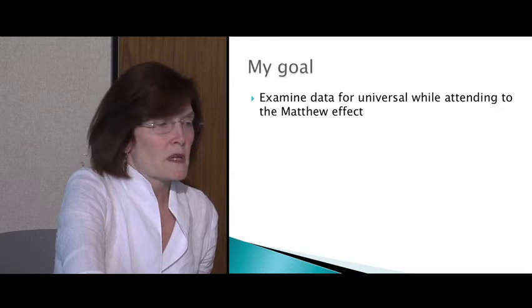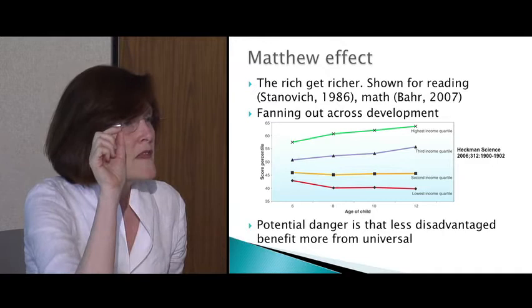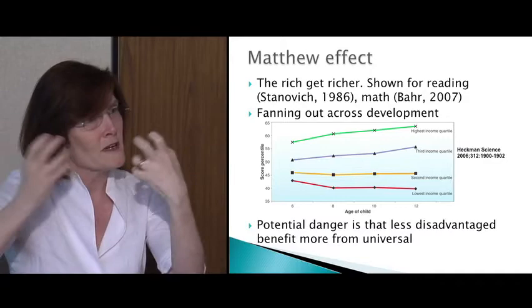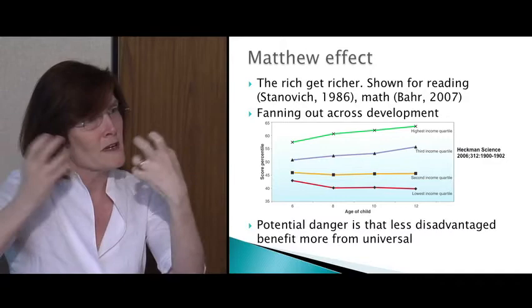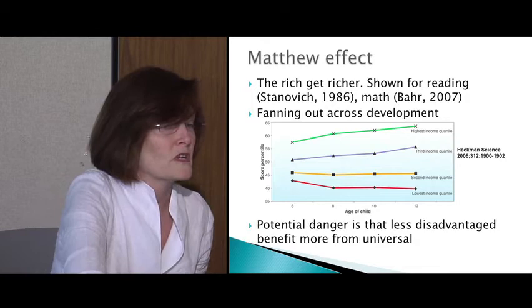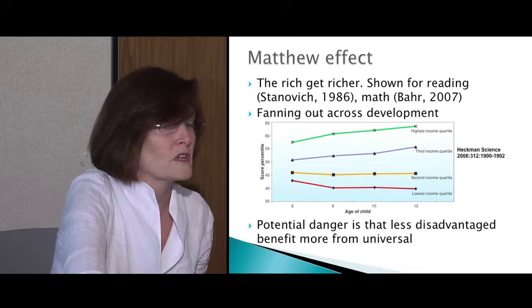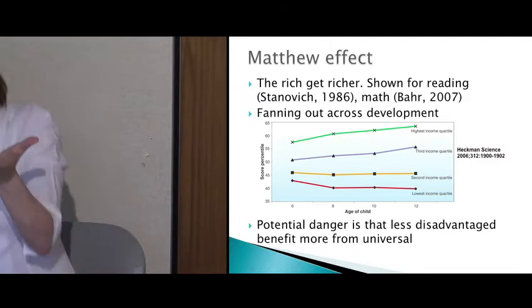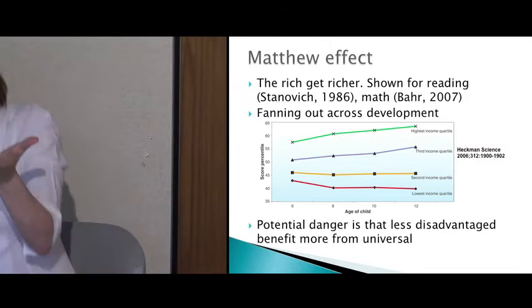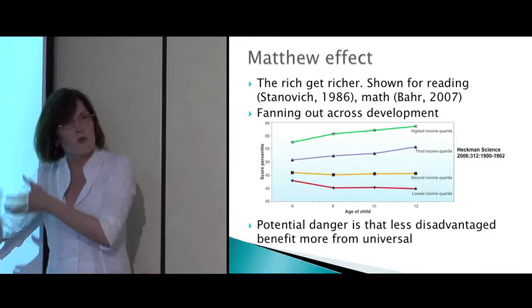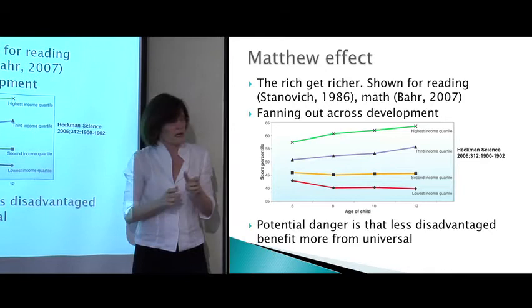I'm interested in something called the Matthew effect — the rich get richer. Keith Stanovich demonstrated this for reading: the earlier you read, the better you become at it, and the more you can make progress from learning to read to reading to learn. This is also seen in math. What concerns me is when you look at six-year-olds, income clusters are tightly clustered together, but by age twelve there's a fanning out. I'm worried that universal programs might increase this fanning out, so that less disadvantaged people benefit more.